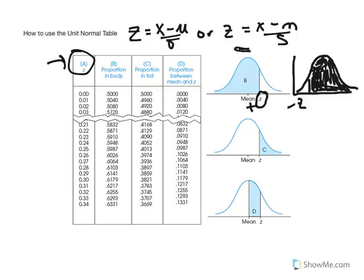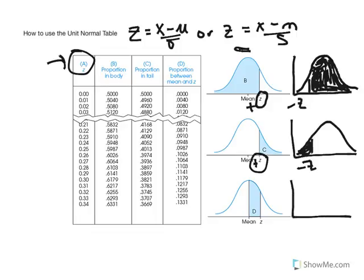For column C, we would be interested in the area above a positive z-score — the smaller area of the distribution. Because the distribution is symmetrical, we see the same on the left side: area in the tail, or area below a negative z-score, representing the proportion or probability of a score less than the mean. Then finally, column D is referred to as proportion between the mean and z, for scores between the mean and a z-score.